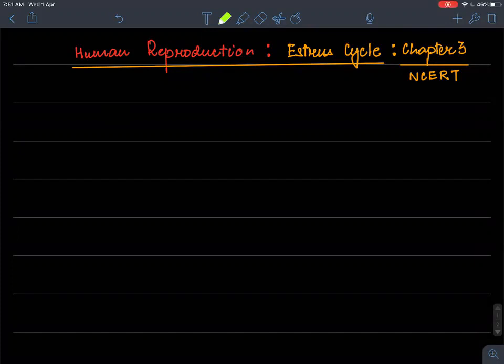estrus cycle is seen only in case of non-primates, which includes every mammal except the primate mammal that is humans, apes, old world monkey. So it is seen in case of non-primate mammals.